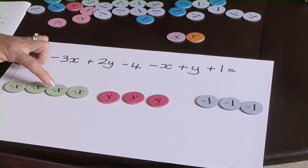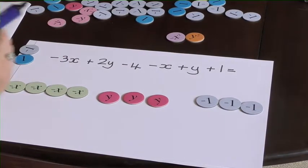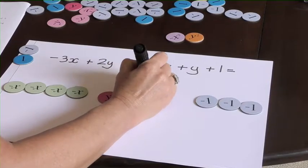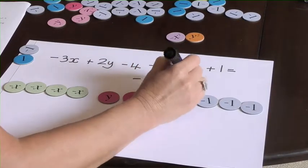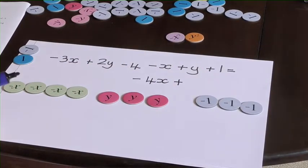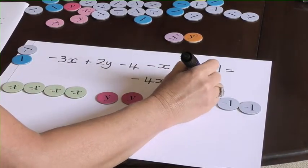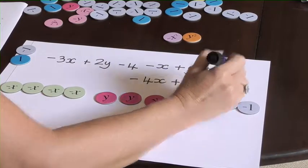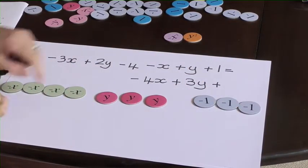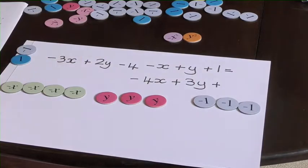I've got 1, 2, 3, 4 negative x's. I've got 1, 2, 3 y's, and I've got 3 negative 1's.